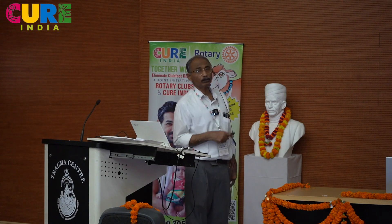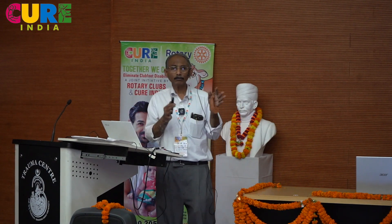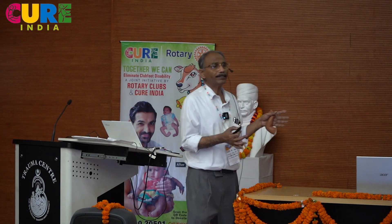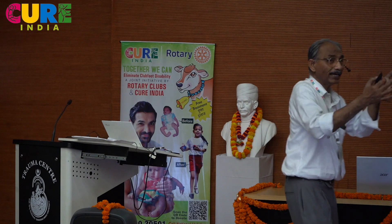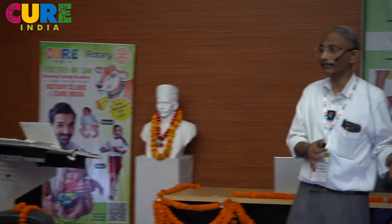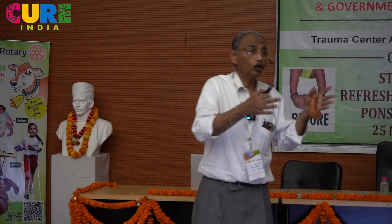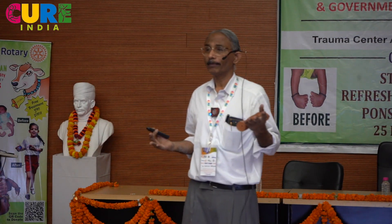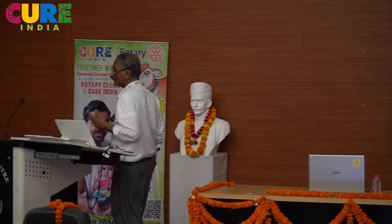Dr. Alaric talked to you about all the conditions that group together as arthrogryposis. The most common one is amyoplasia — failure of development of muscles. Amyoplasia can be diagnosed intrauterine by fetal akinesia syndrome, where the fetus will have no movement in utero or very limited movement in utero.